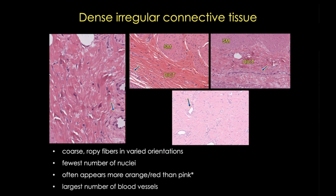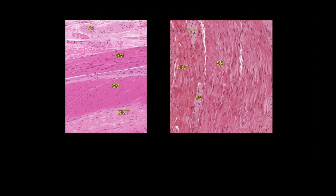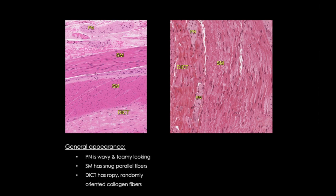To compare, let's look at some sections that have all three tissues. Here in these two sections from the duodenum, I hope that you can now appreciate the wavy, pale nervous tissue, the parallel fibers of the smooth muscle which stains quite darkly, and the many irregular collagen fibers of the dense irregular connective tissue. Remember also that, generally speaking, smooth muscle will stain the most intensely, while dense irregular connective tissue has the fewest number of nuclei.